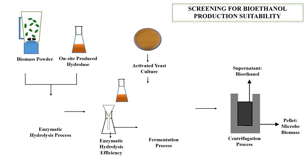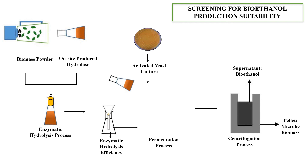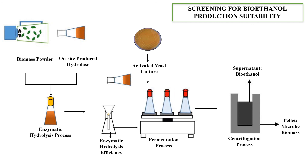In the screening process, the powdered biomass is added with the hydrolysis enzyme for enzymatic hydrolysis. Then the content is filtered. The filtrate is used to test the conversion efficiency of polysaccharides into fermentable sugar. Next, the remaining filtrate is fermented with yeast to produce bioethanol. Lastly, the yield of the bioethanol is quantified.